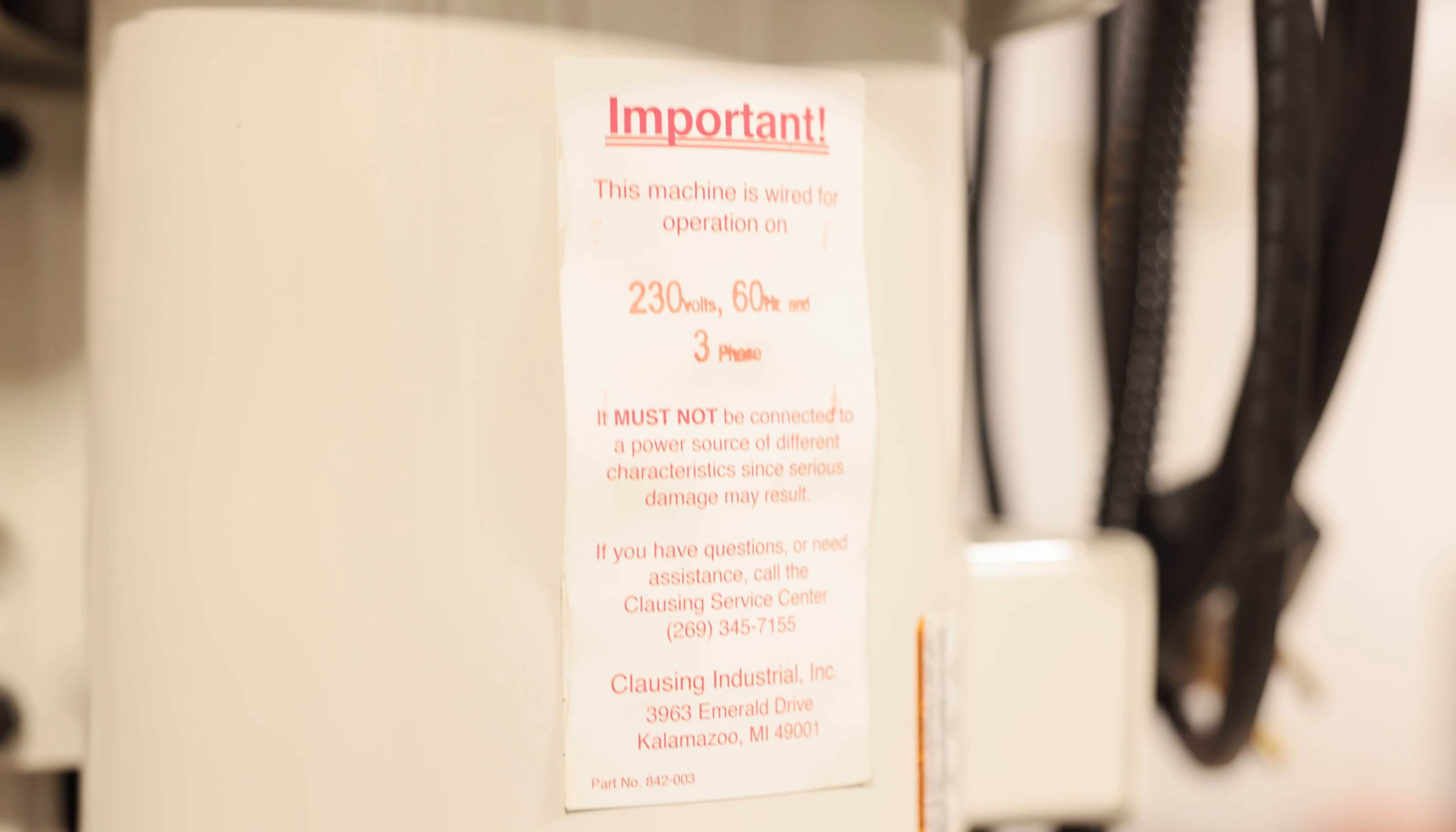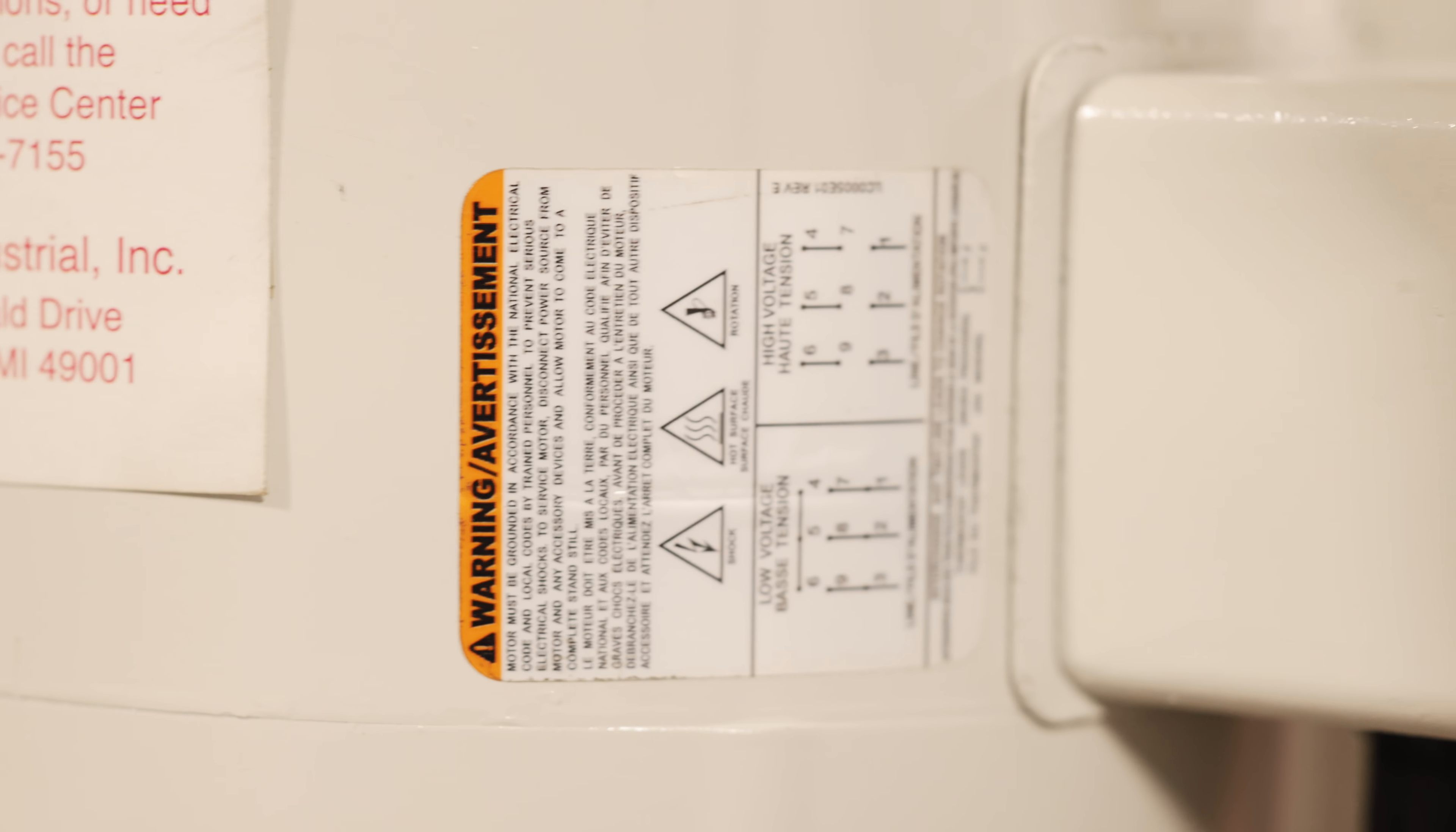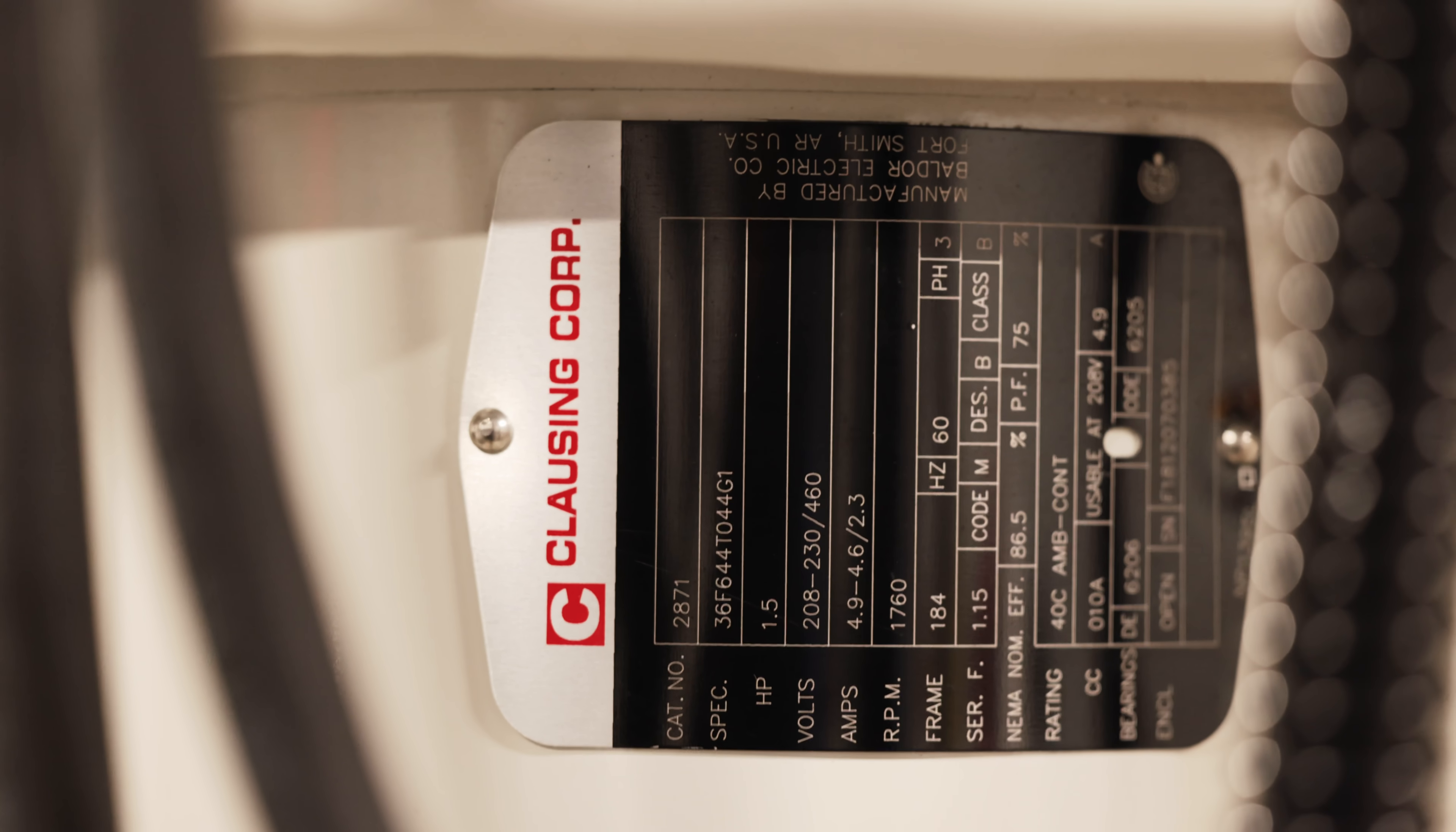The drill press is powered by a 1.5 horsepower 230 volt three phase electric motor at 60 hertz. The electric motor is built by Balder Reliance and has a maximum of 1760 RPMs.